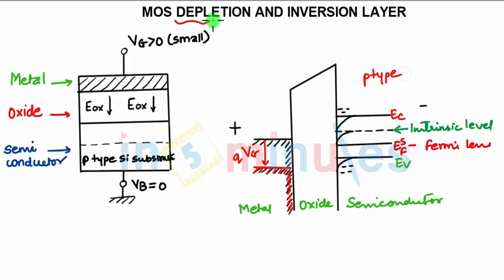Now we'll see the depletion region first and then the inversion layer. A small positive value of Vg is applied, and the substrate is given a bias voltage of 0 volts.